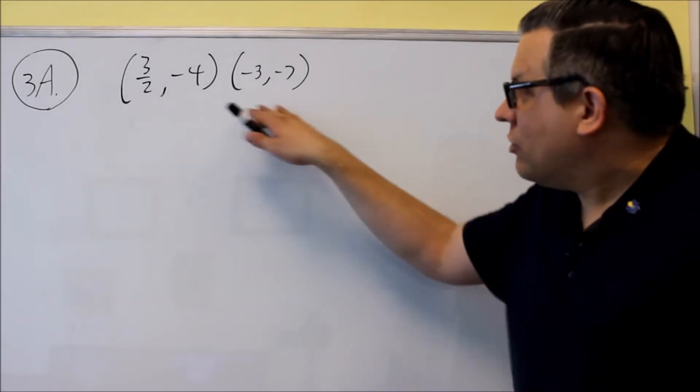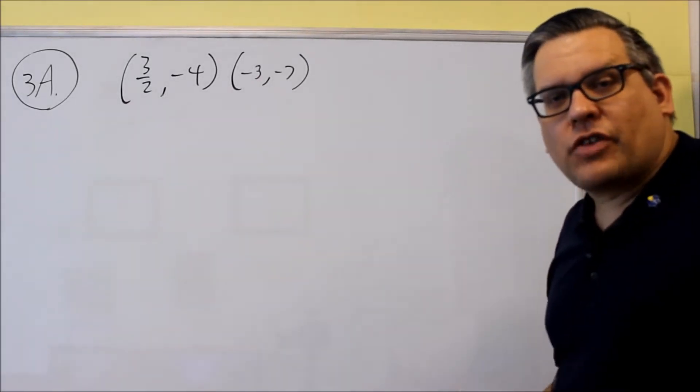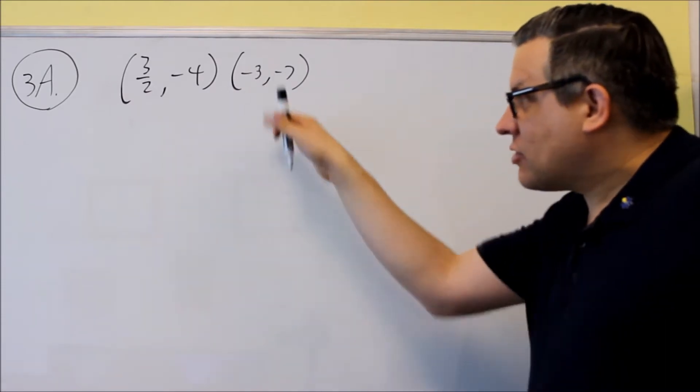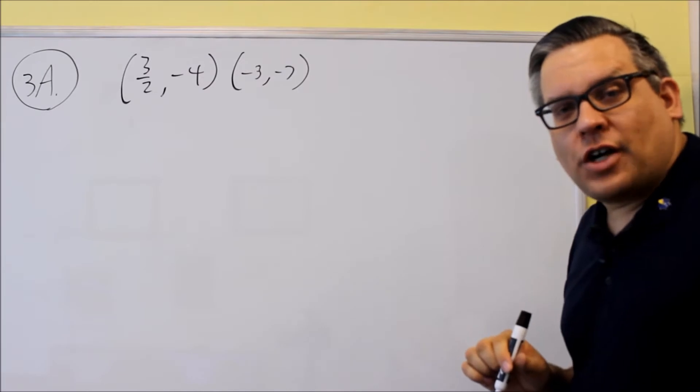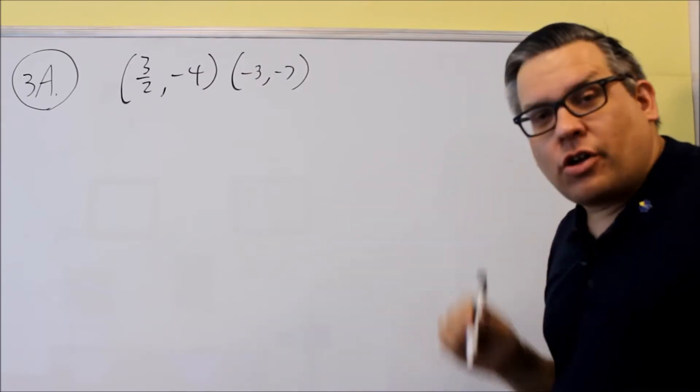For number three, they're going to give you two points, and you want to find the equation of a line that passes through these two points, then you want to graph it. Now the first thing we have to do if we want to find a line is we need to know the slope.